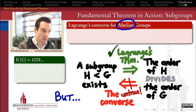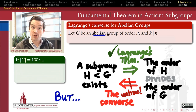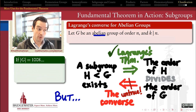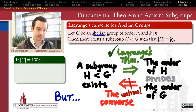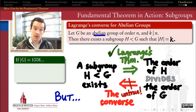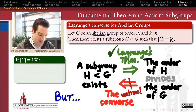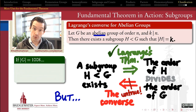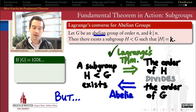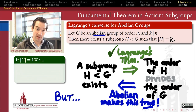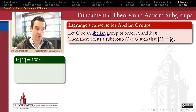When we add the word abelian into the mix, that changes everything for the converse of Lagrange's theorem. If G is an abelian group of order N and I pick a divisor K of N, then the converse of Lagrange's theorem actually does hold — there does exist a subgroup H whose order is equal to that divisor K. This is great news because for abelian groups, Lagrange's theorem works both ways: every subgroup has order dividing the whole group, and every divisor of the order of the whole group is realized as the order of a subgroup.